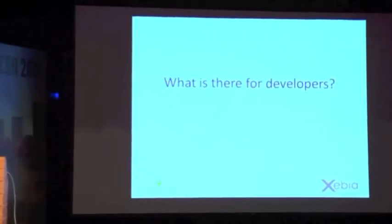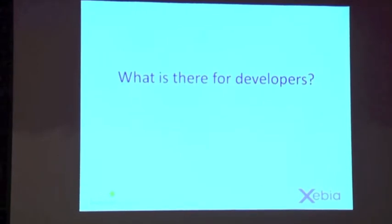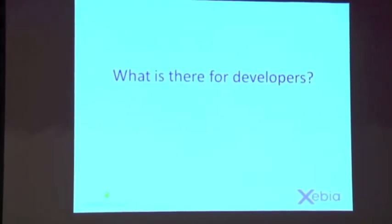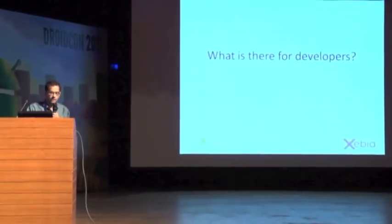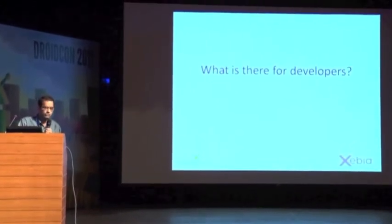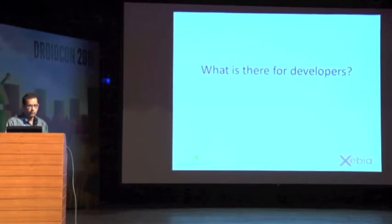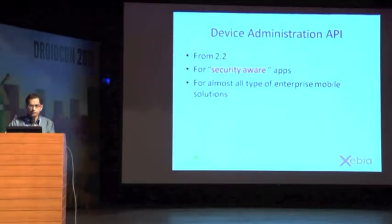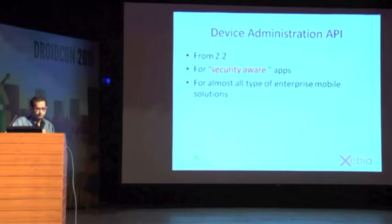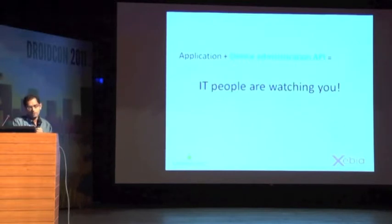As developers, you want to know: what is there for us? How can we leverage the benefits of these APIs? According to Google, since Android is open source, every API used by Google for making applications can also be used by third-party developers, with some security restrictions. For developers, there is the Device Administration API. It was introduced in Froyo 2.2 and is for security-aware apps. There is a basic application, and you introduce the Device Administration API to it.